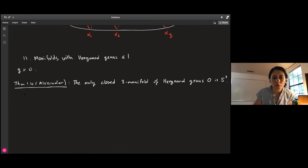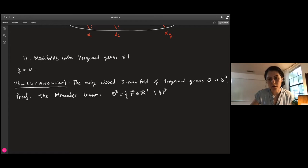The only closed three-manifold of Heegaard genus zero is S³. The proof relies on Alexander's trick or Alexander's lemma, which states that any homeomorphism of S² can be extended to a homeomorphism of the three-ball. Let's identify the ball as vectors in R³ with norm less than or equal to one, so S² is the boundary consisting of unit vectors.